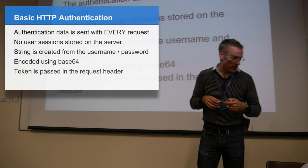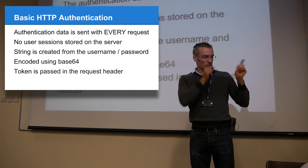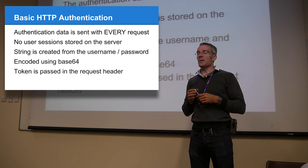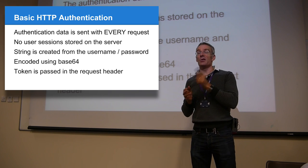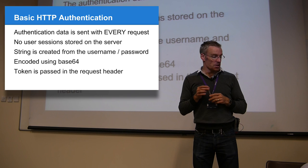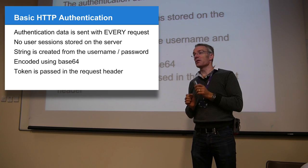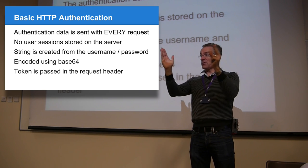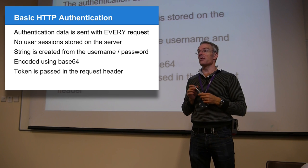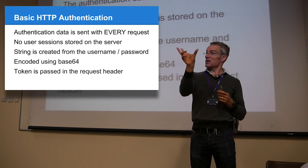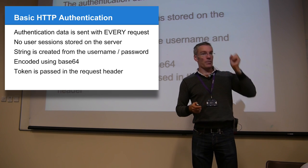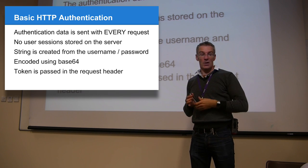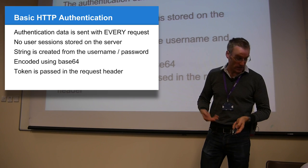HTTP Basic is so basic — that's why it's called Basic. We send a special token with every single request to modify a resource. What we do is create a string from the username and password: username colon password. We concatenate that string, then Base64-encode it to create a special token, and then pass that token in the request header under the Authorization key. The bookshop API now implements that properly so you can see it in action.